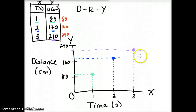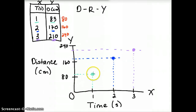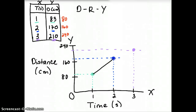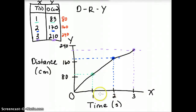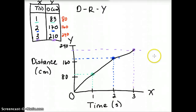Now we have the three points plotted: one second, two seconds, and three seconds. We're going to connect them — normally we use a ruler. From zero to one second, one second to two seconds, two seconds to three seconds. Notice what you can conclude about the distance traveled versus time for this particular car.